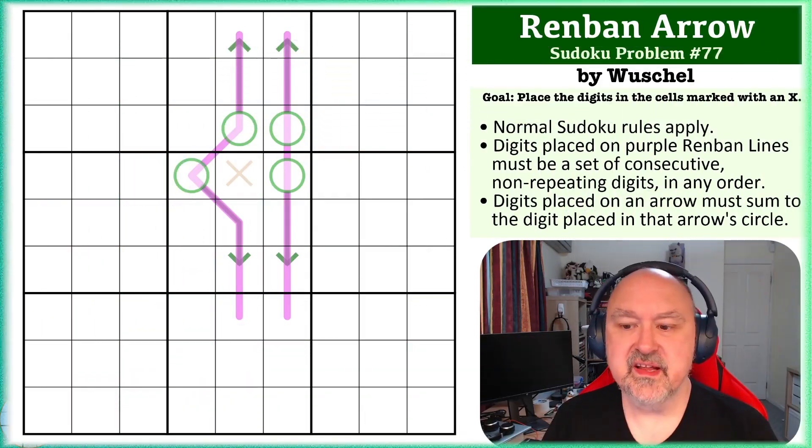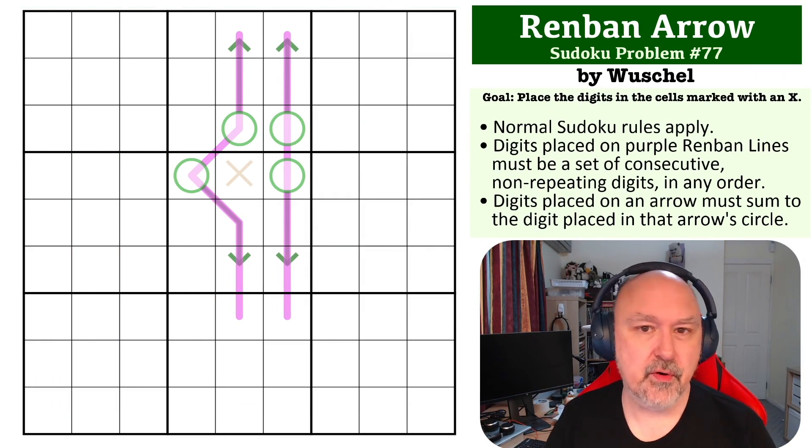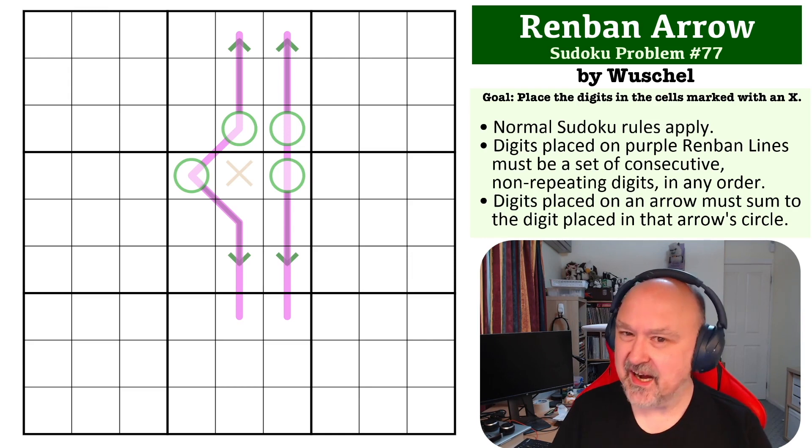Hey everyone, this is Burnster, and this is number 77 in the Sudoku Problem Series. This is a Renban Arrow problem submitted by Wuchel, and this is being rated as a hard problem by testers.